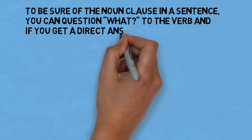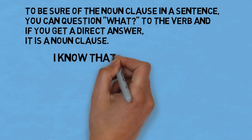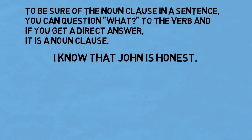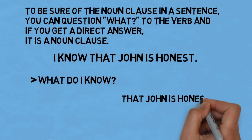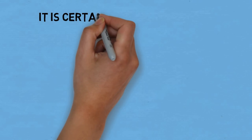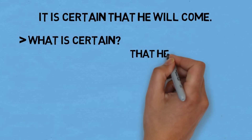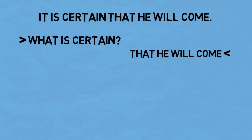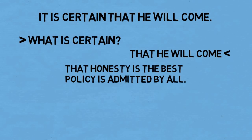To identify a noun clause in a sentence, you can ask 'what' to the verb — if you get a direct answer, it is a noun clause. For example, in 'I know that John is honest', if you ask 'what do I know?' you get the direct answer 'that John is honest'. Further examples: 'It is certain that he will come' — what is certain? 'That he will come' is a noun clause. 'That honesty is the best policy is admitted by all' — what is admitted by all? 'That honesty is the best policy' is a noun clause.